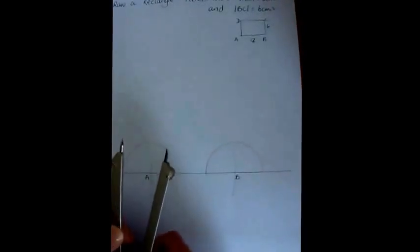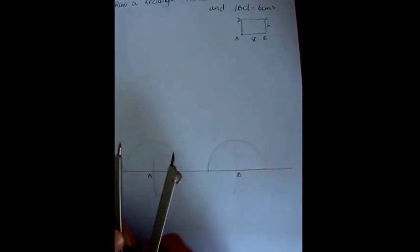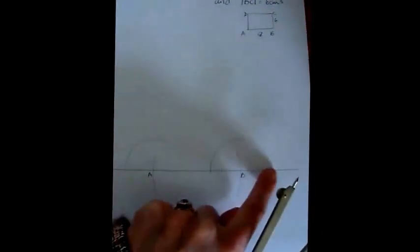The next thing I'm going to do is widen out my compass. Note I'm not using a ruler. I'm going to keep that compass at the same radius and I'm going to draw four more arcs.